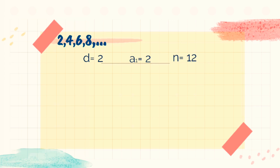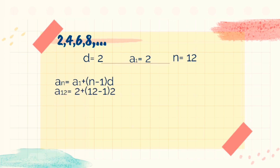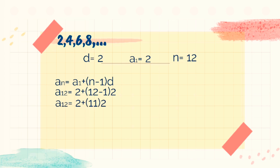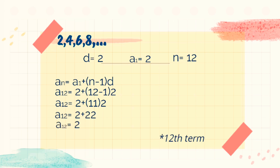With the formula that we have, we should substitute the common difference, the first term, and the nth term as well. That would lead us to: a sub 12 equals 2 plus the quantity of 12 minus 1 times 2. Then, with PEMDAS, we get a sub 12 equals 2 plus the quantity of 11 times 2. Then, a sub 12 equals 2 plus 22. And that would lead us to the answer of the 12th term, which is 24.